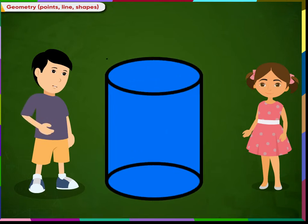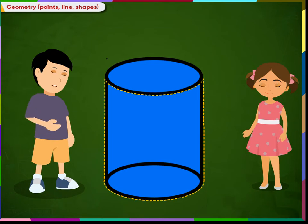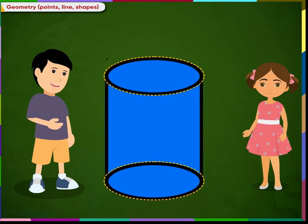This is a cylinder. A cylinder has one curved surface and two flat surfaces, this one and this one.